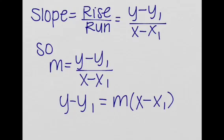Rise over run is just y minus y1 over x minus x1. So basically, m, which is the slope, is equal to y minus y1 over x minus x1.